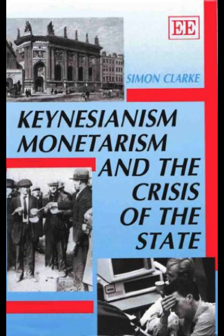Keynes himself shared the view of the committee that the post-war priority was the expansion of exports, and from 1941 threw himself into the task of rebuilding the international monetary system, which culminated in the establishment of the International Monetary Fund and the International Bank for Reconstruction and Development at Bretton Woods in 1944. Parallel negotiations to secure the post-war liberalization of trade culminated in the General Agreement on Tariffs and Trade in 1947, while the political framework for international reconstruction was to be provided by the United Nations and associated agencies.